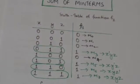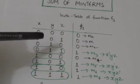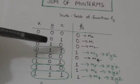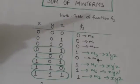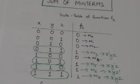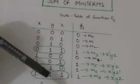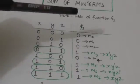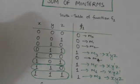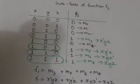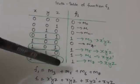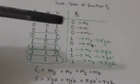We have now found the minterms for those combinations of values of x, y, and z for which the function gives the output 1. The function f1 can be represented as the sum of these minterms: m3 plus m5 plus m6 plus m7, where plus is the OR operator.